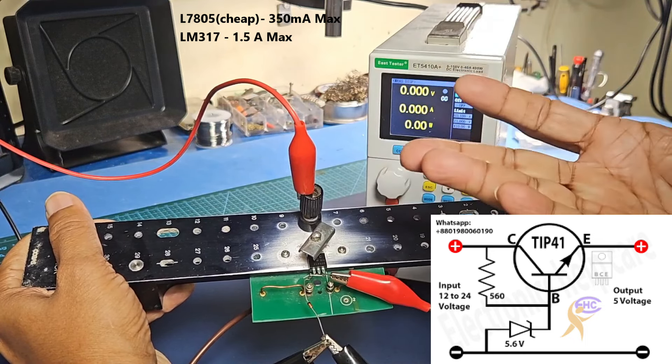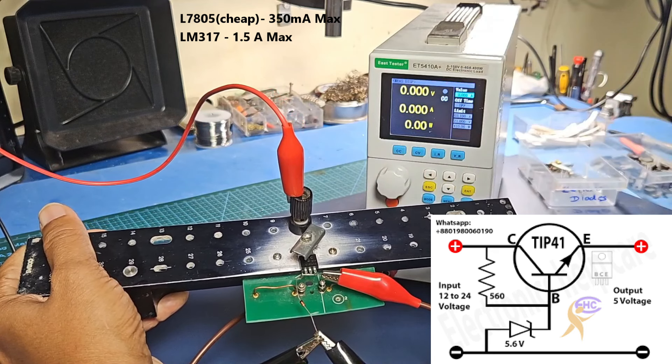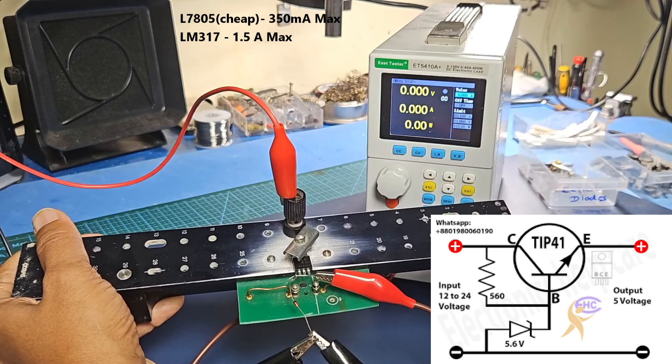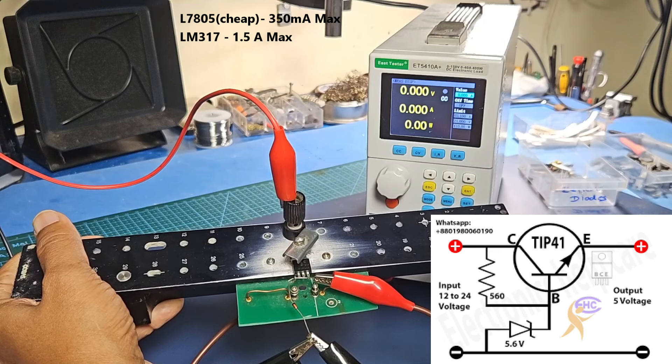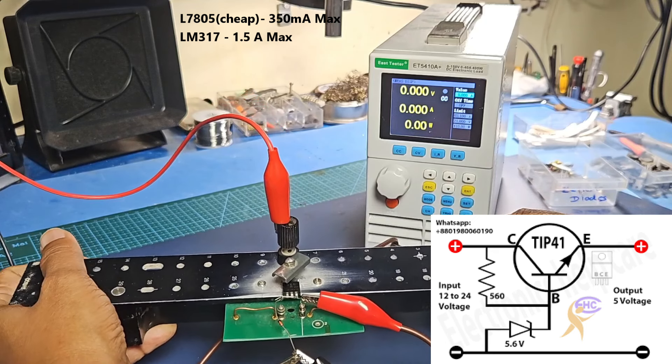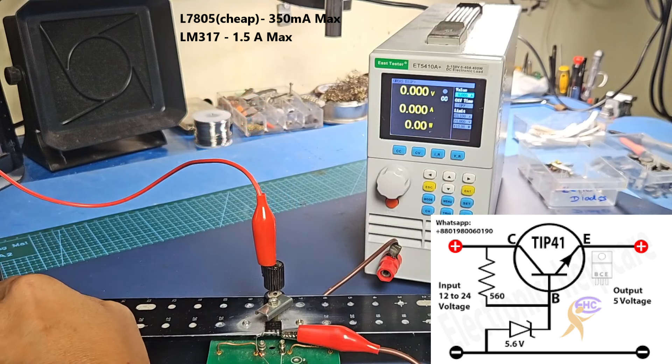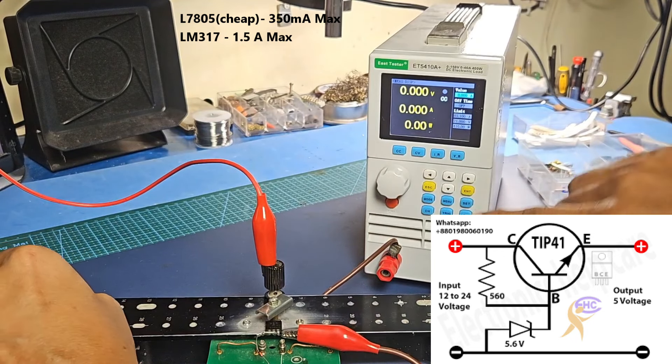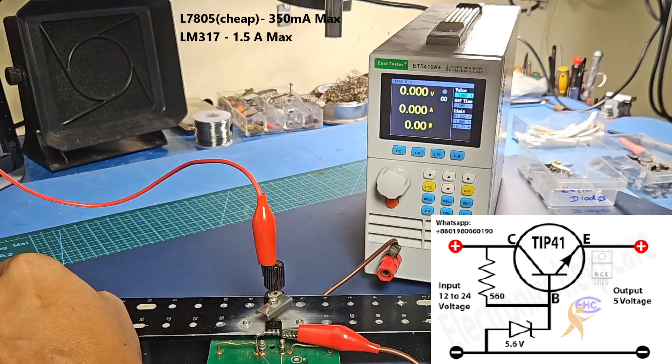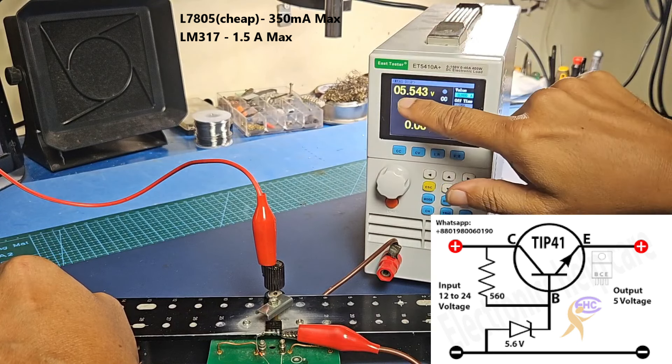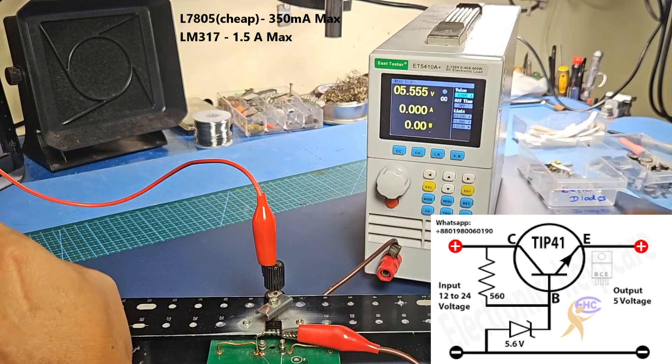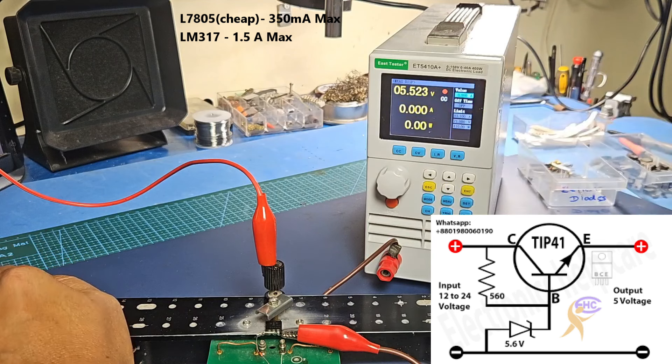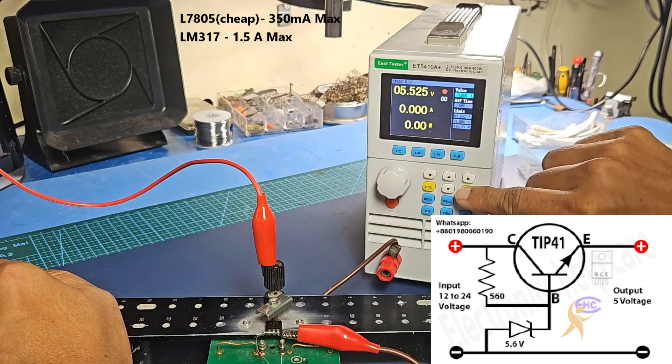We have the 7805 regulator circuit with basic capacitors. The input voltage is 12 volts and we're testing with load up to 3.5A to determine the current rating.